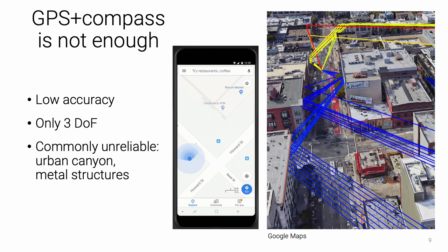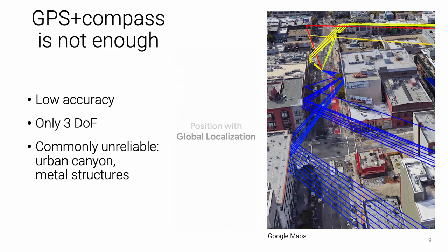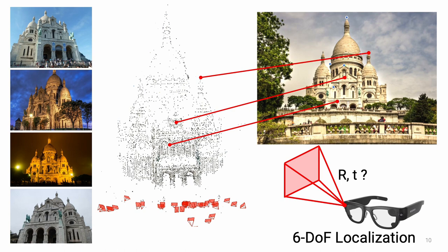Cameras, however, are versatile and accurate. To estimate the pose of a query image, the standard approach finds correspondences between the image and a 3D point cloud reconstructed using mapping images and structure-from-motion. This approach can be very accurate and scales well to large areas, but faces several limitations.